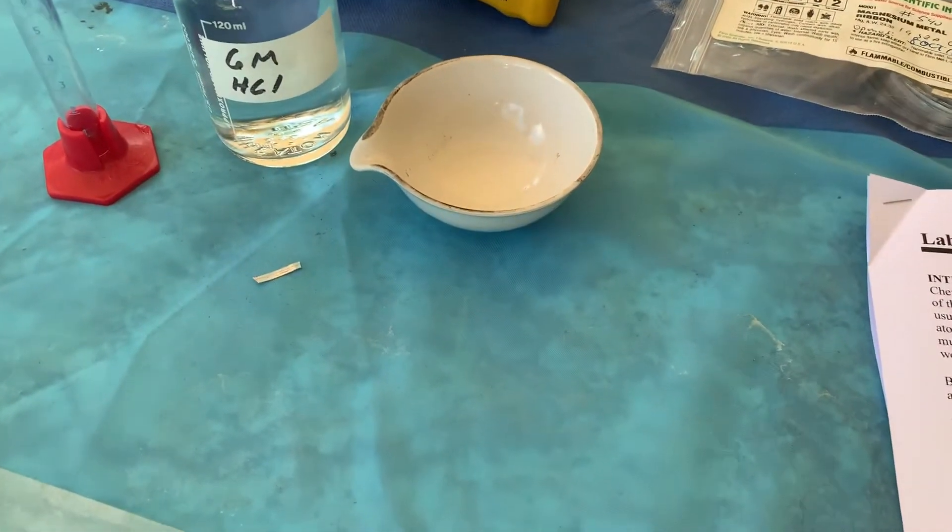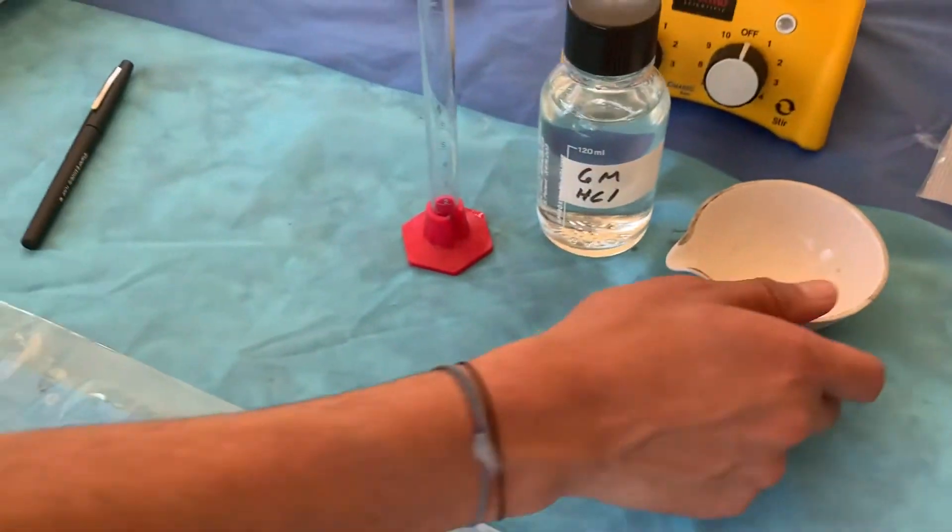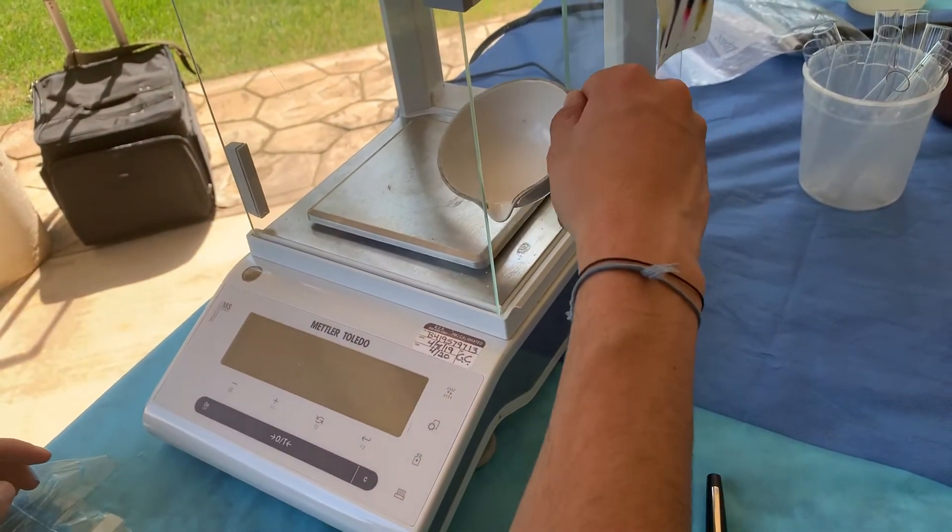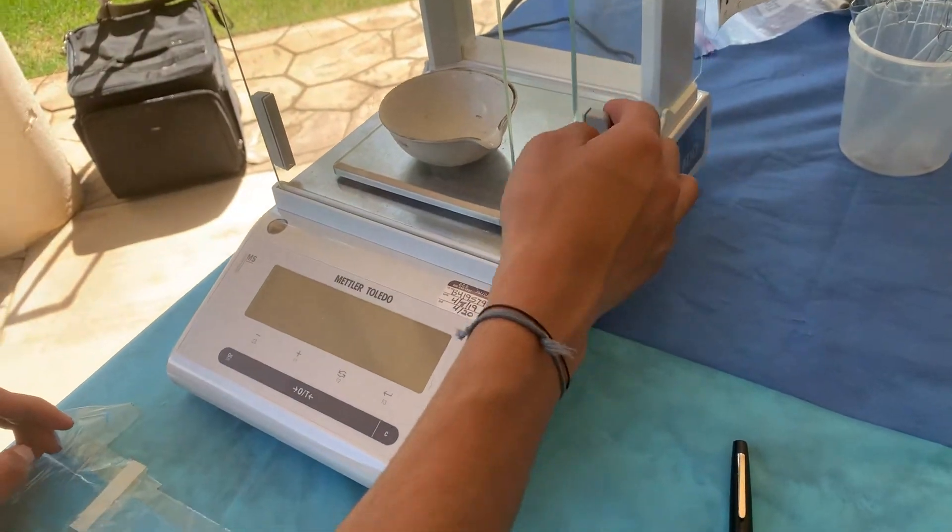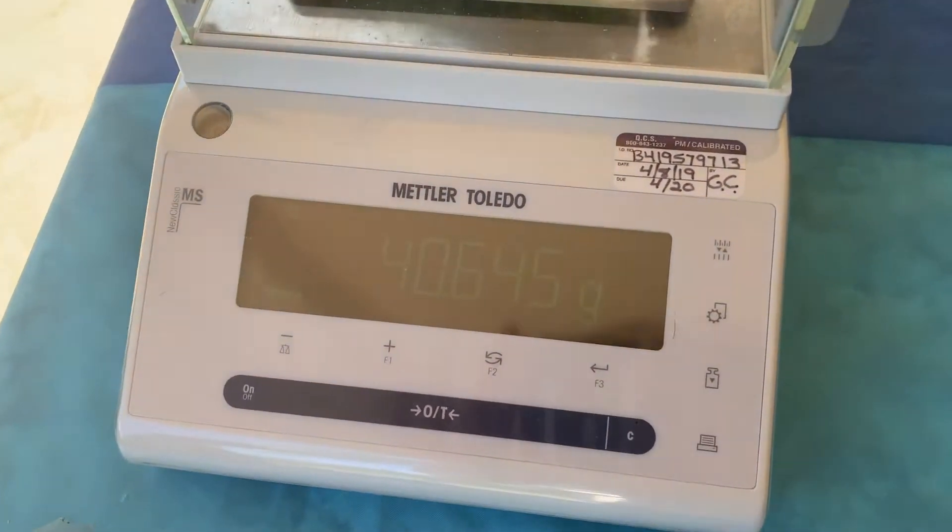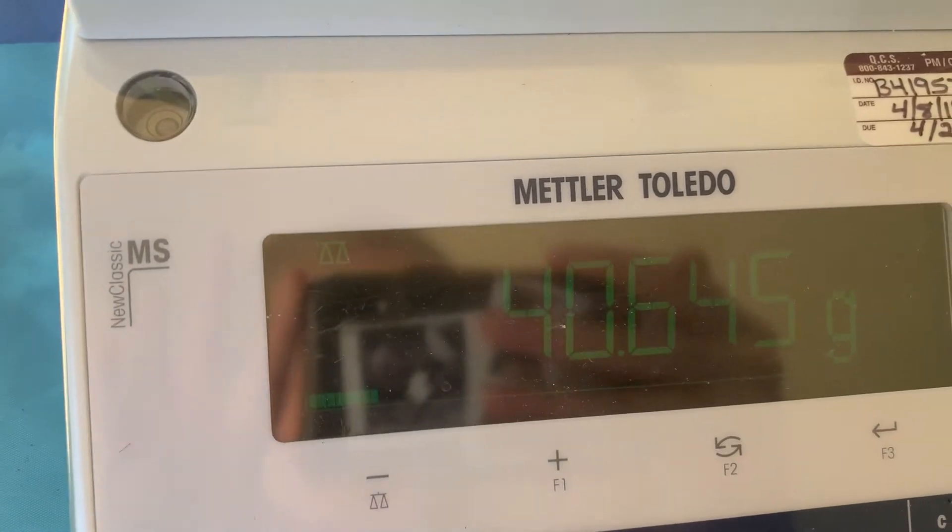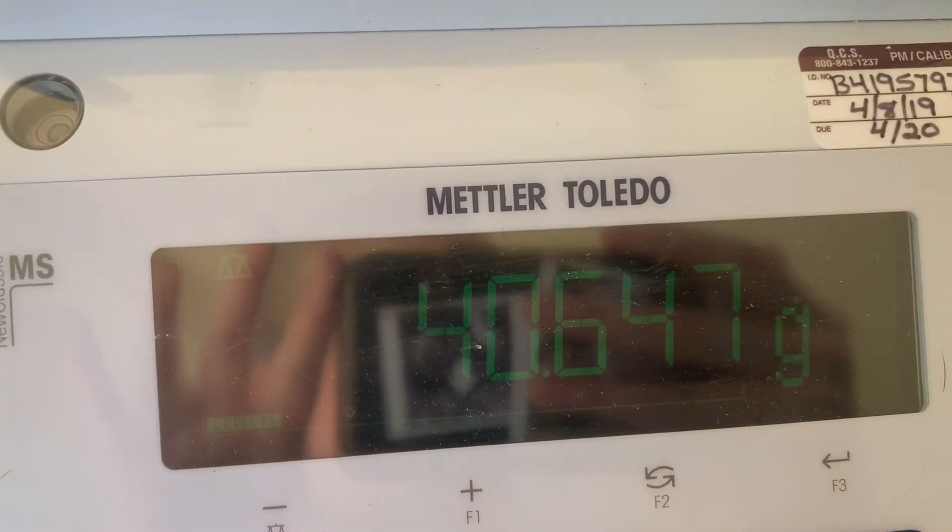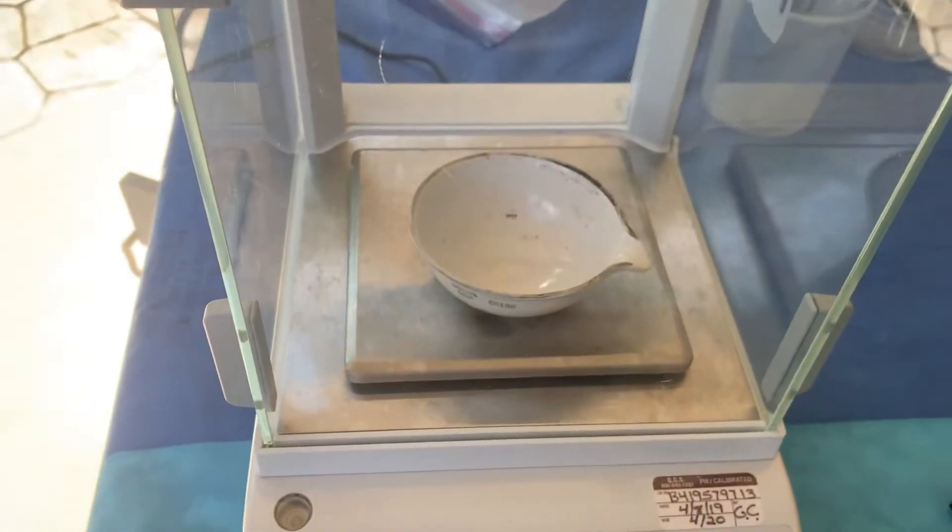So first we're going to measure just the mass of the evaporating dish. Tear the scale. And that is the mass of just the evaporating dish.